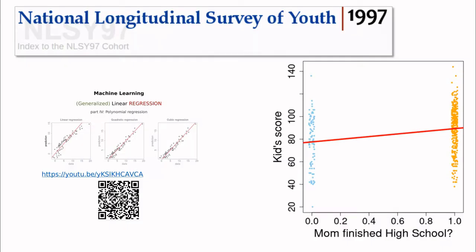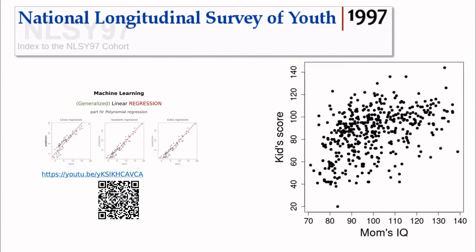Let's go back to this national longitudinal survey of youth. We discussed this correlation between kids score and the question mom finished high school. But we can also take a look at this data set and try to plot all the information. In this case, in that data set, we can also see the mom's IQ.